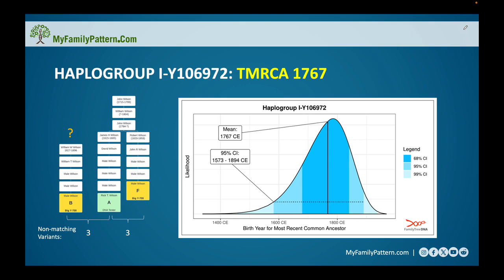Tester F and I shared three private variants — the same number of variants as between me and Tester B. This caused Family Tree DNA to reconsider, saying maybe the 1814 estimation isn't exactly right, because the number of mutations wasn't figuring out well between all parties. With a larger sample size they can become more informed, and they refined the estimate. Our new time to most recent common ancestor became 1767.